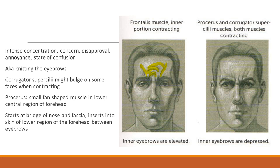The corrugator supracilii might bulge in some faces when contracting. The procerus is a small fan-shaped muscle in the lower central region of the forehead between the eyes, right above the bridge of the nose. It starts at the bridge of the nose and inserts into the skin of the lower forehead region between the eyebrows, creating an angry or displeased face.